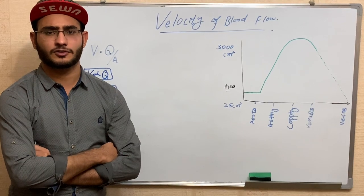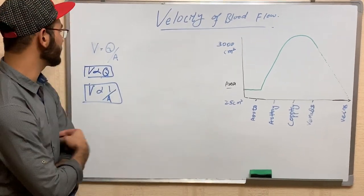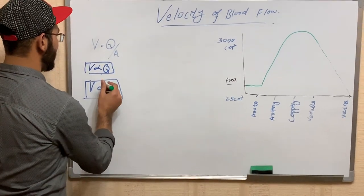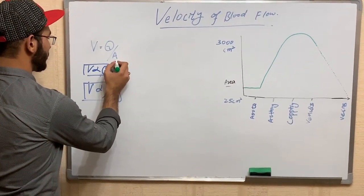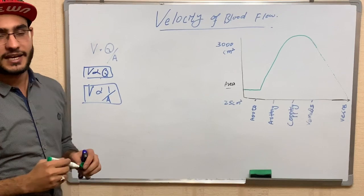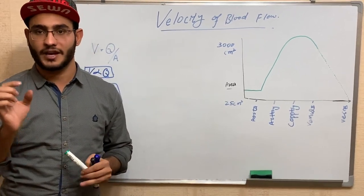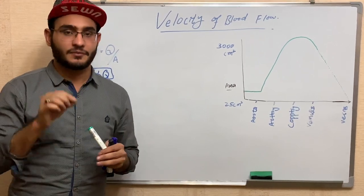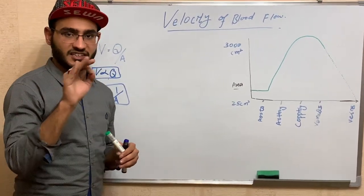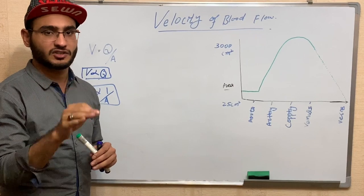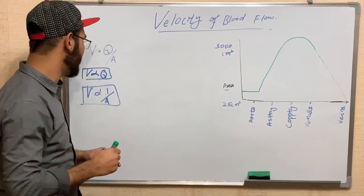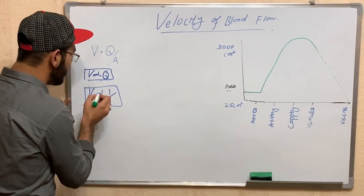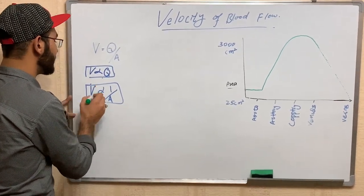Today we are going to discuss the velocity of blood flow. The velocity of blood flow is directly proportional to the volume of blood flow and inversely proportional to the cross-sectional area. This means that as the volume of blood flow increases, the velocity of blood flow will also increase.